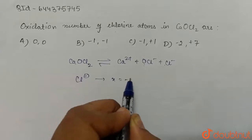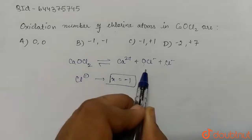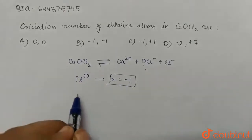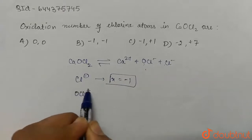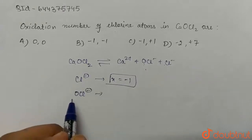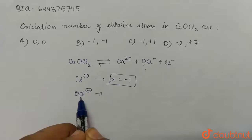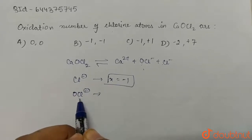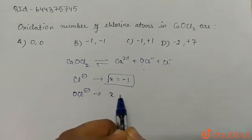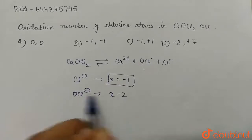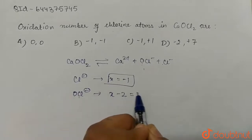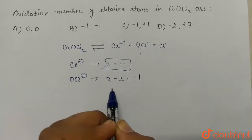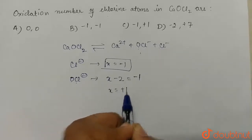And in case of OCl-, here we have OCl-. Let's calculate the oxidation number of chlorine. So let's take the oxidation state of chlorine as x, then we have minus two since we have one oxygen atom and the total charge is minus one. So from here x will come out to be plus one.